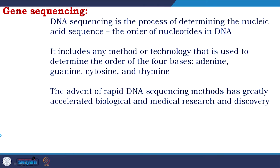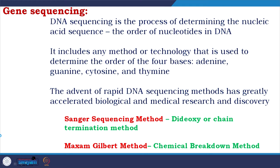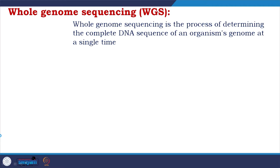The advent of rapid DNA sequencing methods has greatly accelerated biological and medical research and discovery. There are two methods: Sanger sequencing, which we talked about, and the Maxim-Gilbert method, which is a chemical breakdown method. I focus on Sanger sequencing because, even today, it remains relevant.